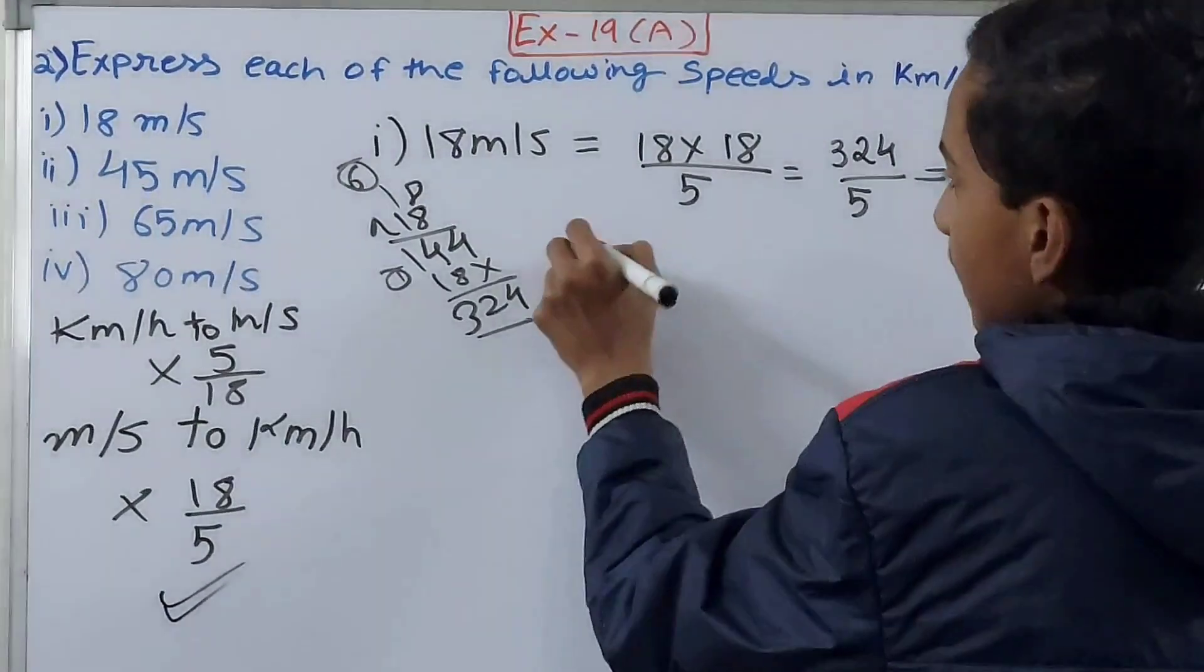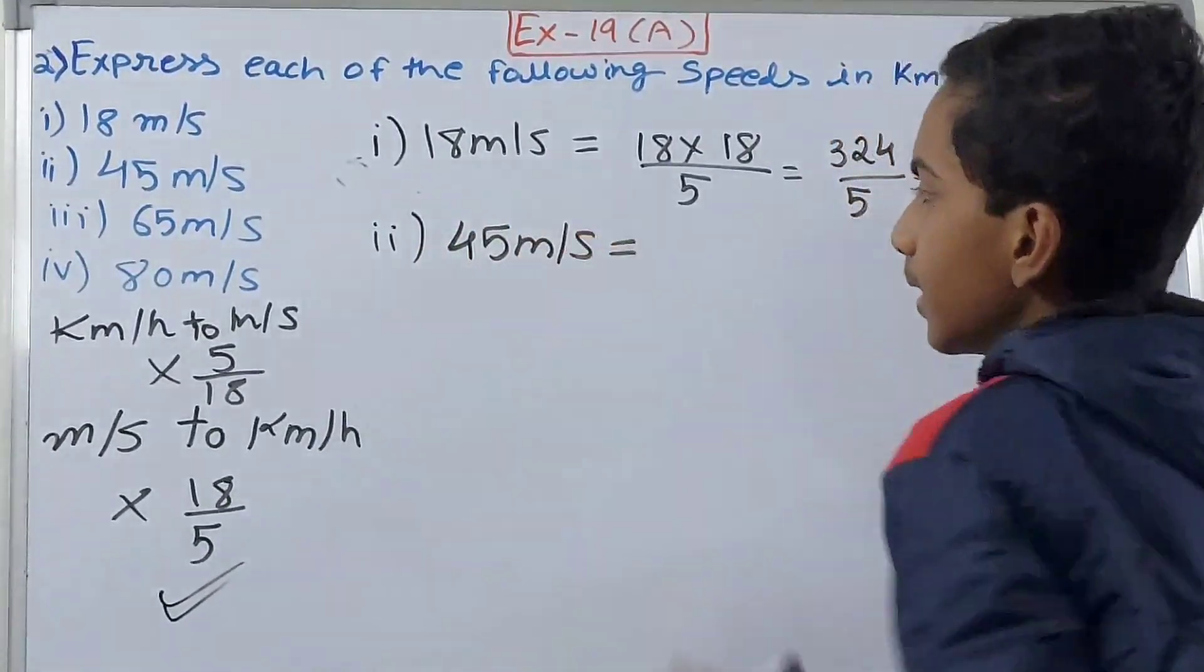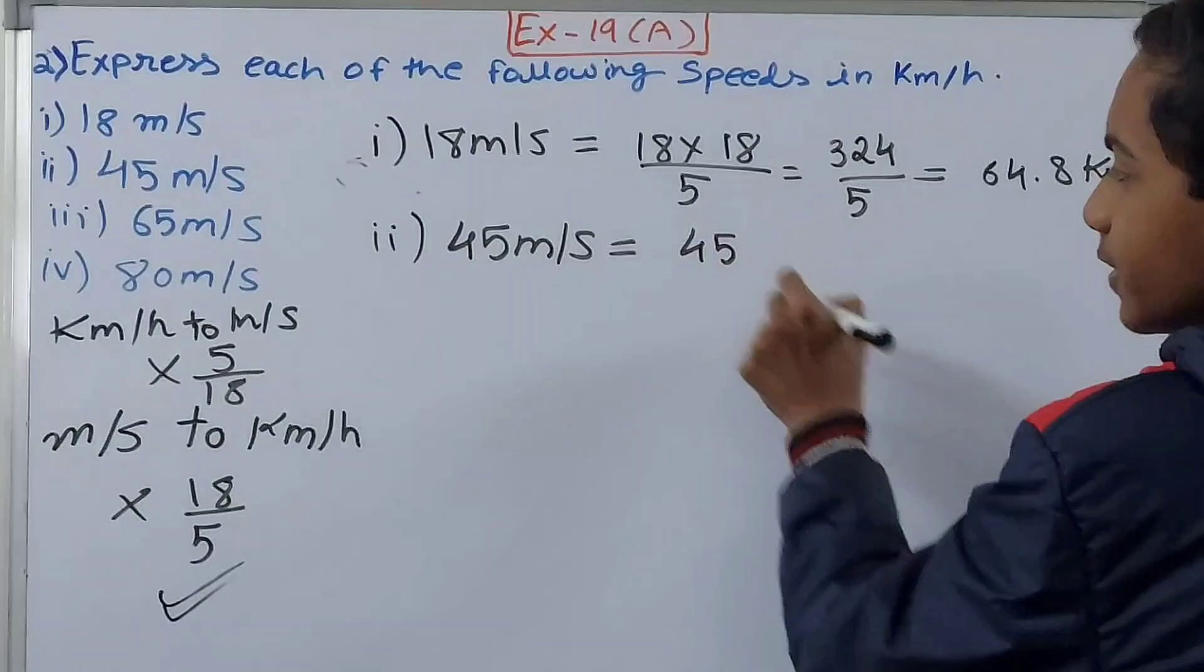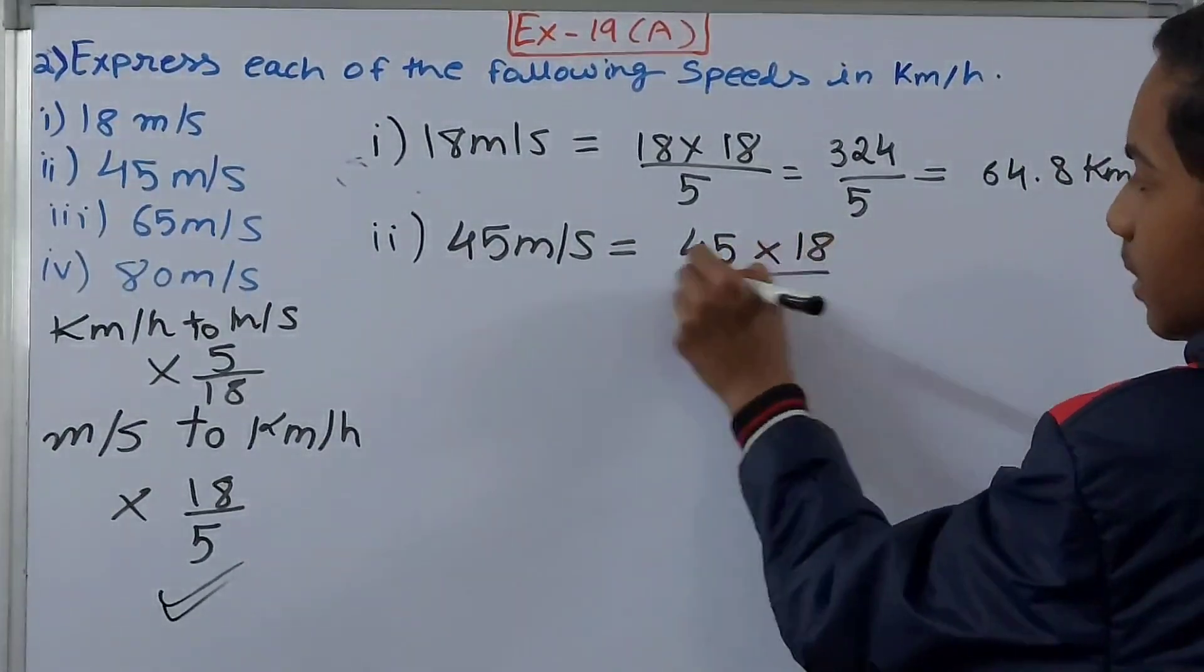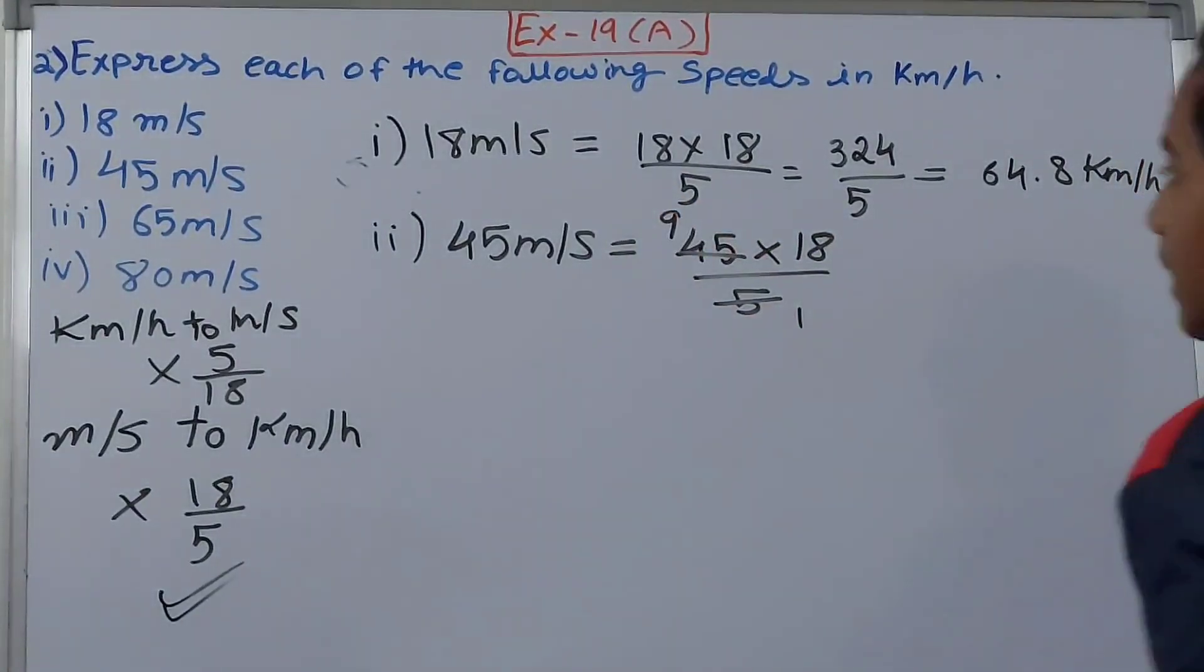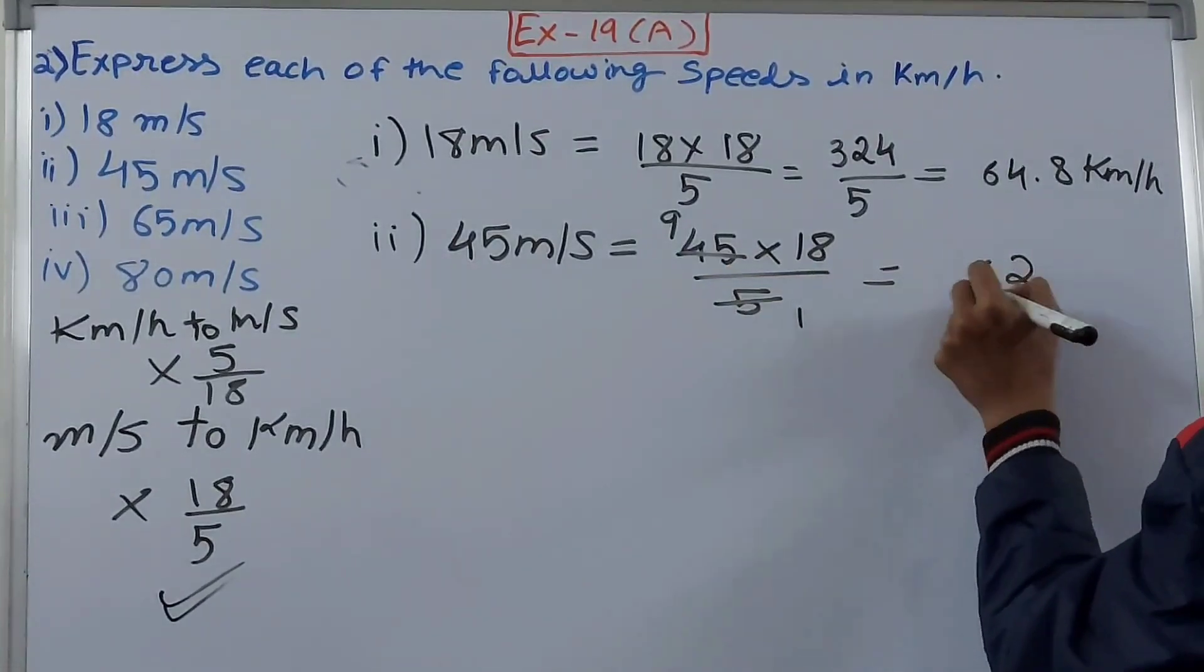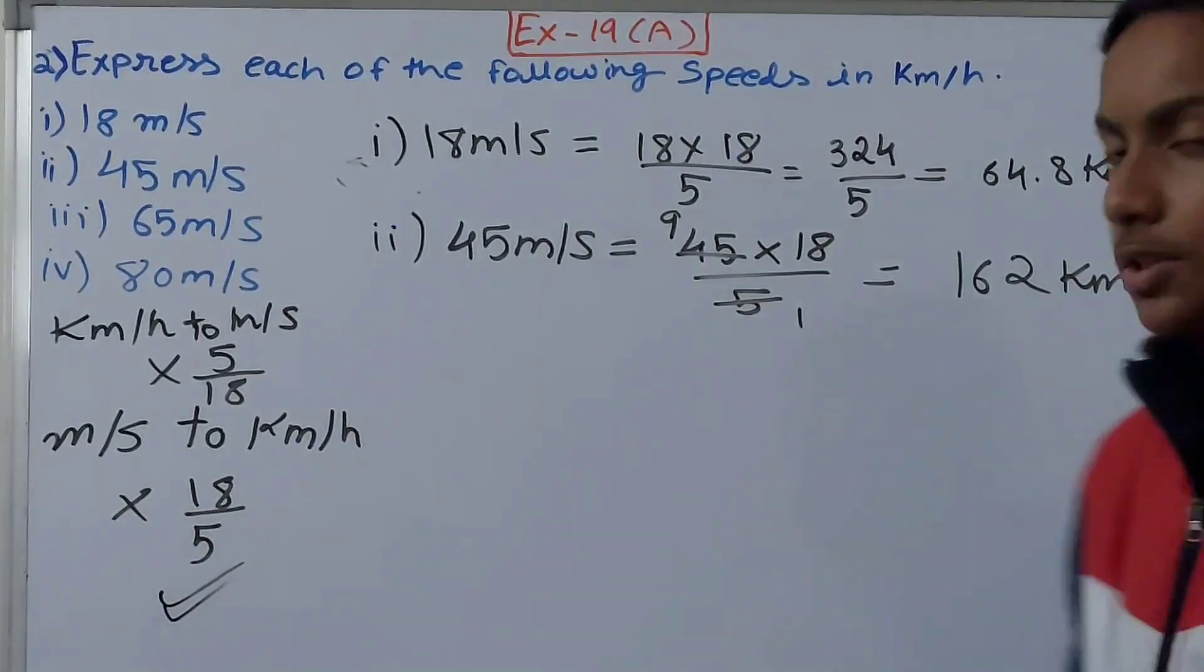The second part is 45 meters per second. So 45 × 18/5. Cancel to get 9 × 18. 9 × 8 is 72, plus 7 is 79, then 9 × 1 is 9, plus 7 gives 16, so 162 kilometers per hour.